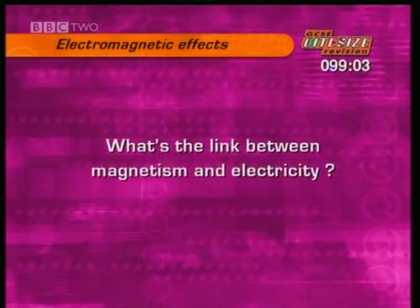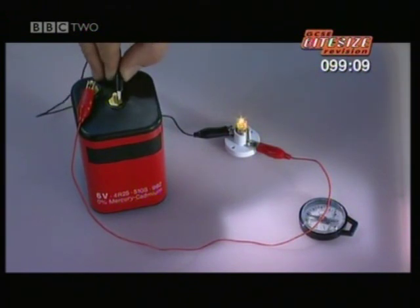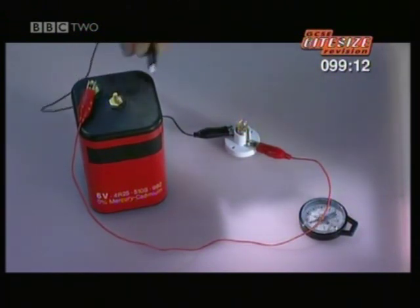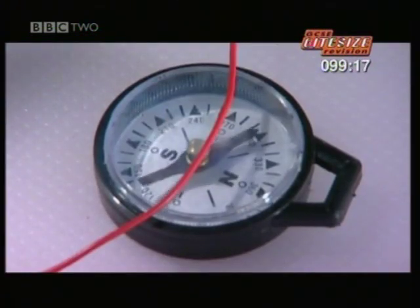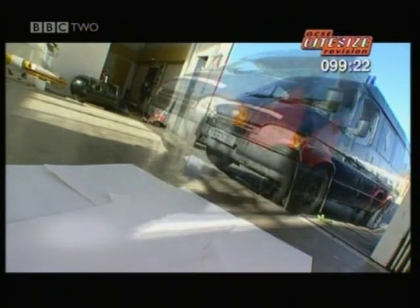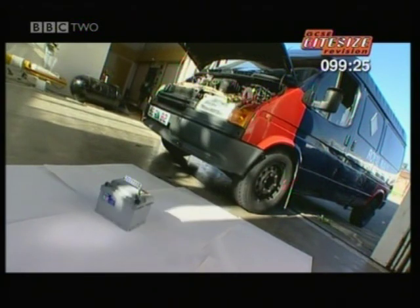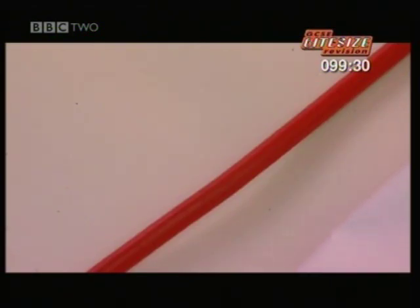What's the link between magnetism and electricity? The battery makes a small current that lights up a bulb, but the current also makes a magnetic field. It's just strong enough to push the needle on this compass, but only just. A larger battery can send a much bigger current down this wire to work a van's starter motor. Even so, the magnetic field made by the big current is only just strong enough to push iron filings into line.